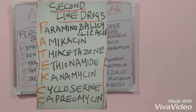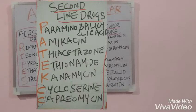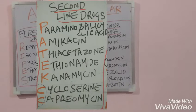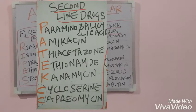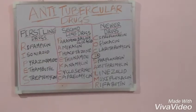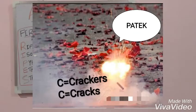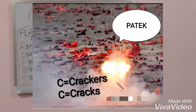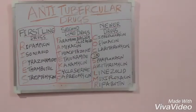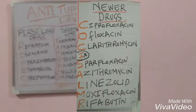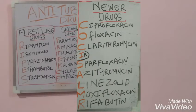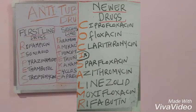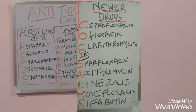In the second line drugs we have PATEKCC — that is PATATCC. CC means how the cracker cracks, and it sounds PATATCC. And we have the newer drugs where we have COCISALMR.